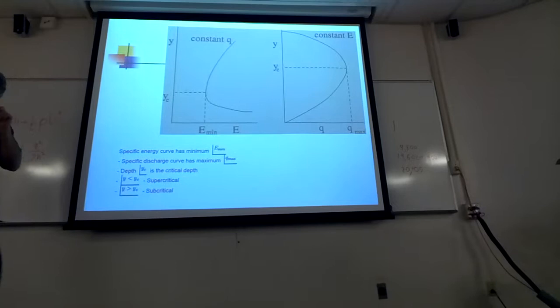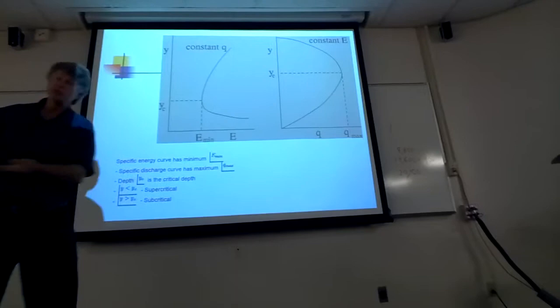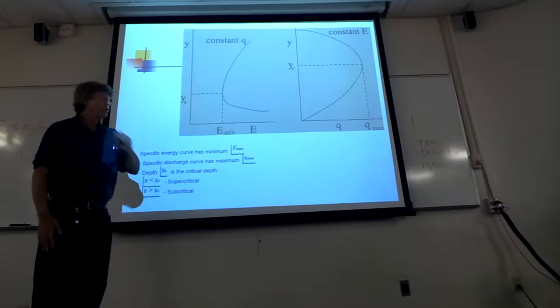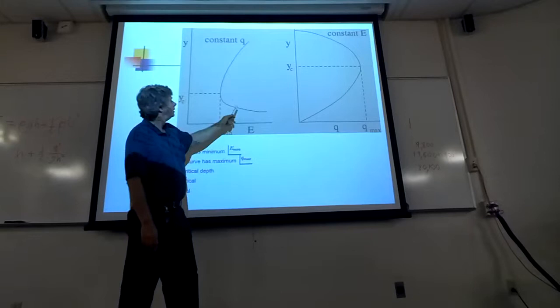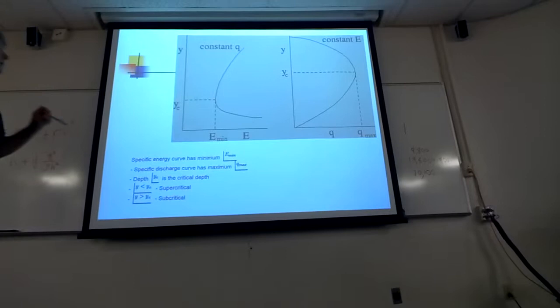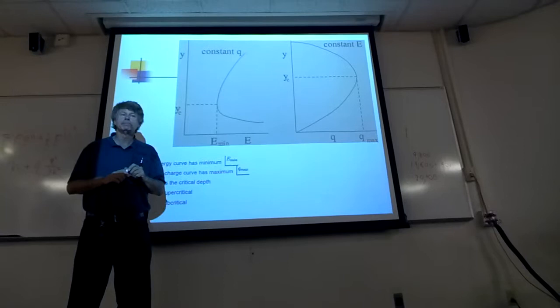You can either increase the velocity of the stream or you can increase the depth of the stream. And we saw that, right, how you can have things that have most of the water, most of the energy stored as kinetic energy or most of the energy stored as depth energy. And so, for any energy in a stream, there are two states of flow. Two different equally valid points where the stream is stable. So, there are two water depths and two velocities for any stream.